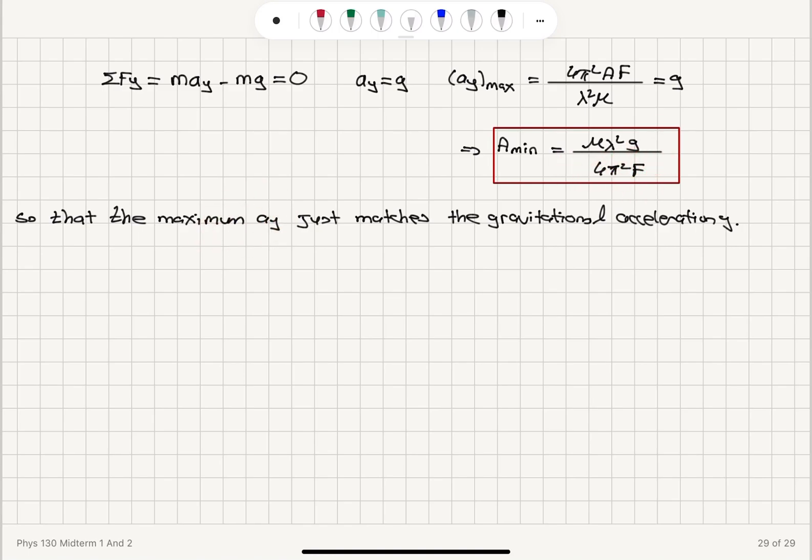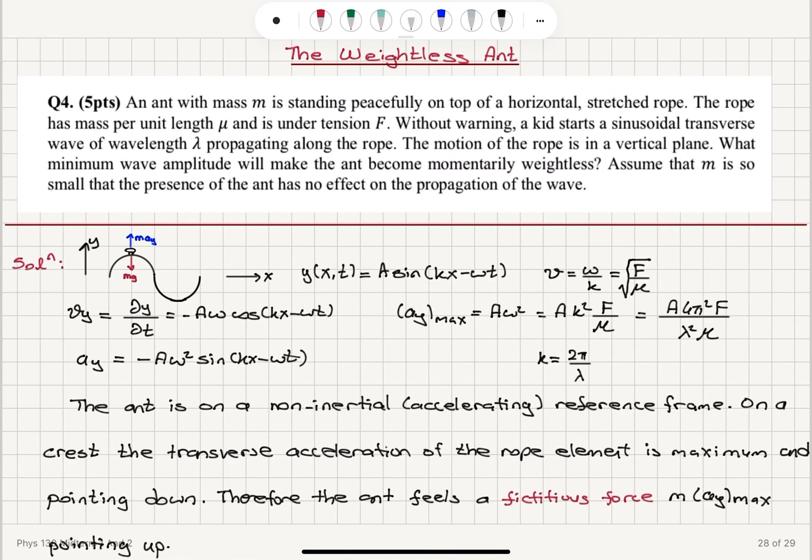The maximum ay value with this minimum amplitude just matches the gravitational acceleration g and makes the ant weightless momentarily during the propagation of the transverse sinusoidal wave.